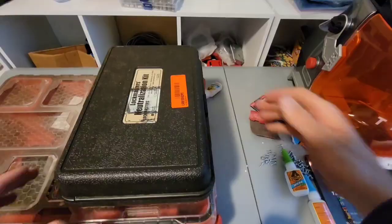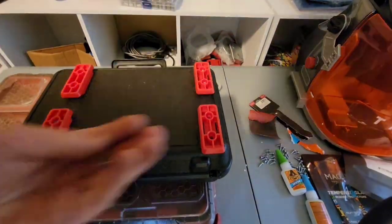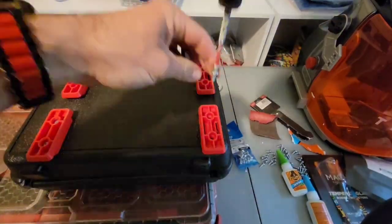Once we slide them into an existing Packout container, then we can just set the box on top. The glue then dries. Give it about 10 minutes.